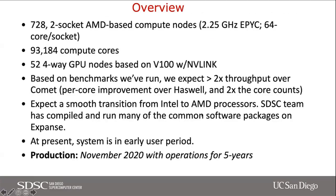Overall, Expanse has 93,000 compute cores, almost double the Comet core count. Based on benchmarks, we expect more than 2x the throughput over Comet. Most applications will see a per-core improvement ranging from even performance up to about 1.8x on some applications. Since the nodes have 128 cores, on a per-node basis you're going to see a pretty large improvement in performance.